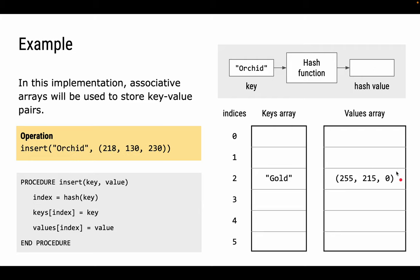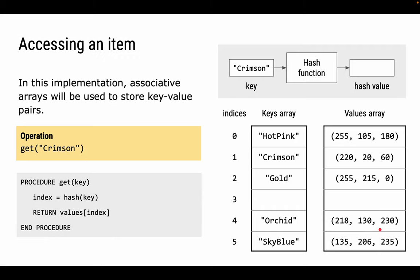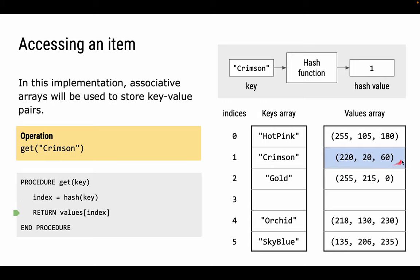Now let's access an item. With the hash table filled with more colours, each at a location determined by the hash function, if I want to get a value for 'crimson', it's a very simple procedure. We just call the hash function on the key, which gives the index, and return the value from the values table at that index. We put 'crimson' into the hash function — out comes 1. We go to location 1 in the values array and return the RGB tuple.